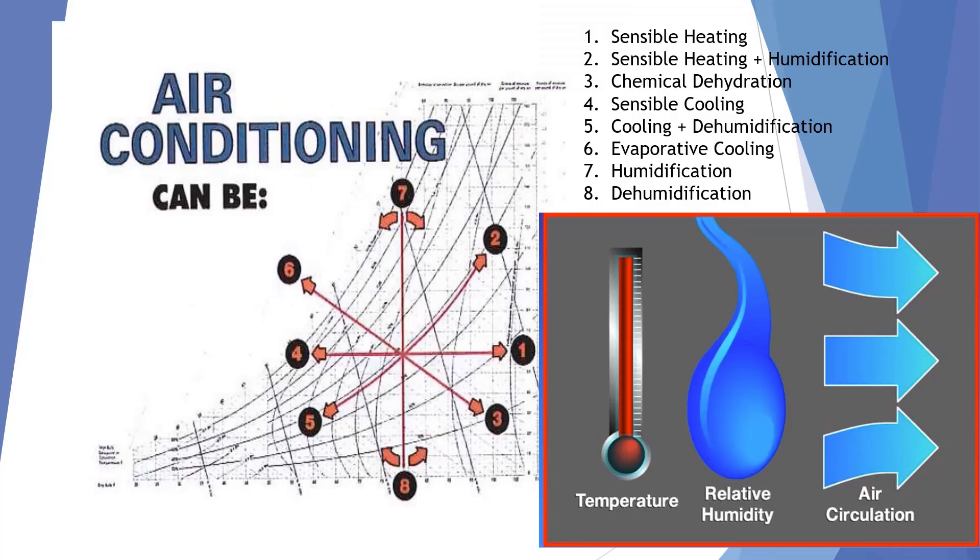Here we see the eight properties of air shown on the psych chart and the changes that can occur: heating, cooling, humidification, dehumidification, and evaporation. By understanding and controlling the temperature, the relative humidity, and the circulation of air, we can control the comfort level for inhabitants of the conditioned space.